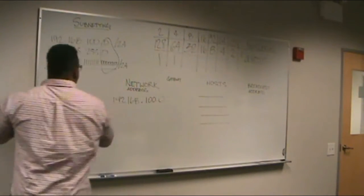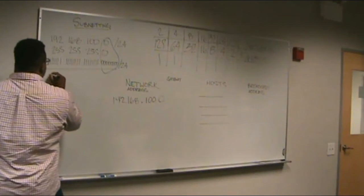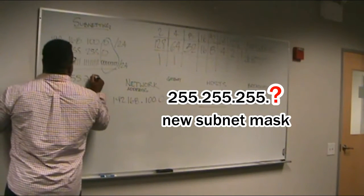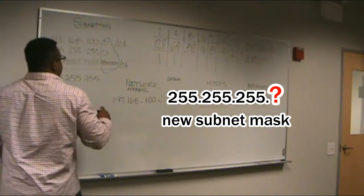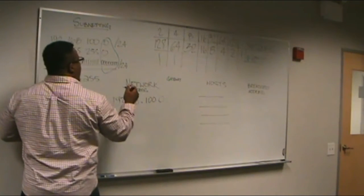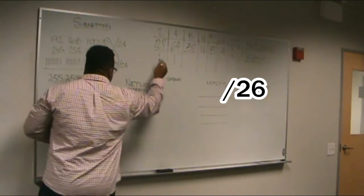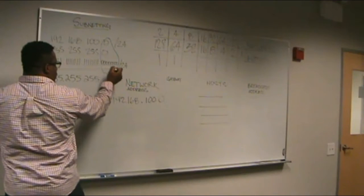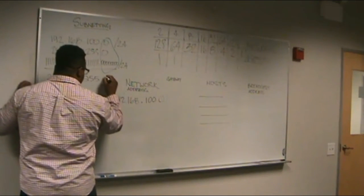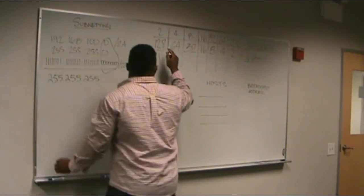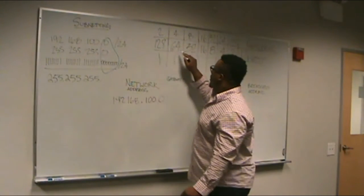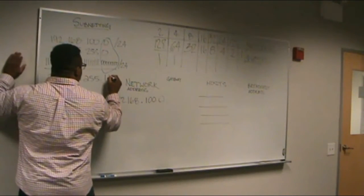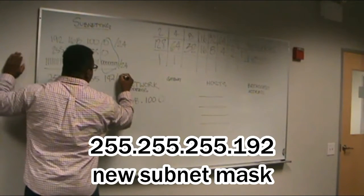So we're going to get our new subnet mask: 255.255.255 — and you know that this is going to be a slash 26 network because you're borrowing two bits. You see here, 24 is the base. If you're borrowing two, you're going to add two to it. To get the last octet of the subnet mask, you're going to add the 128 and the 64, which gives 192. So you have 255.255.255.192, slash 26.